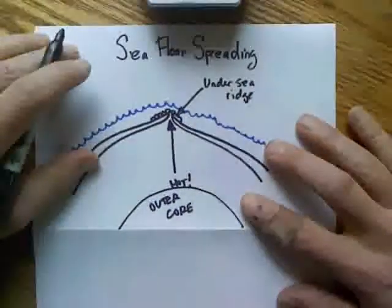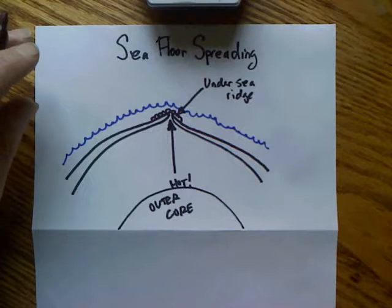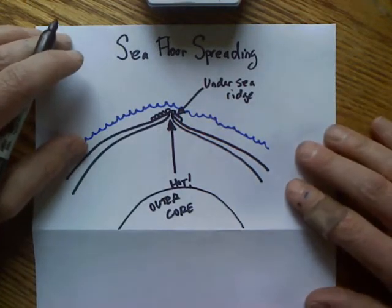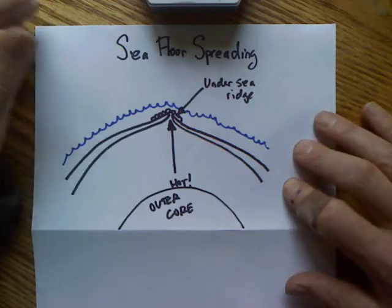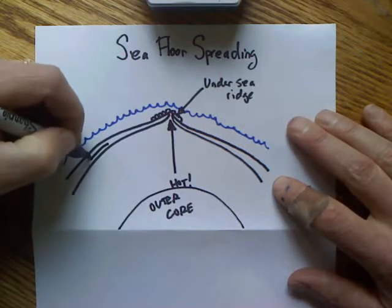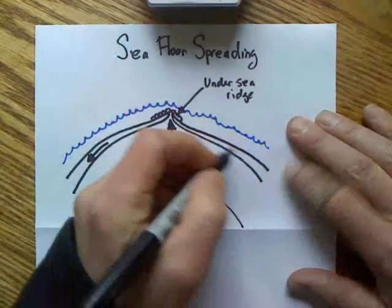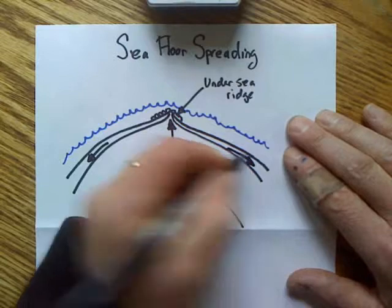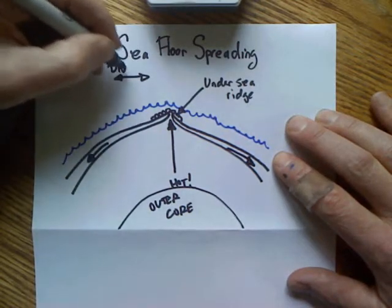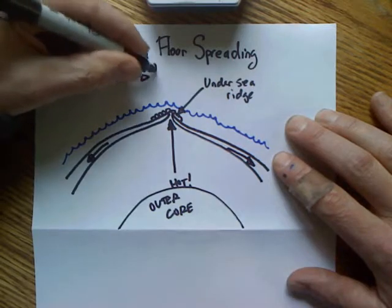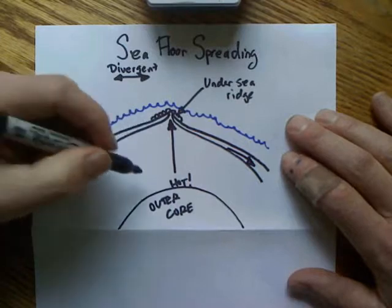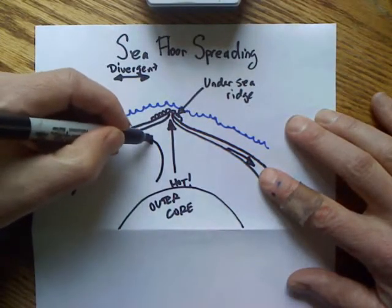This is huge — it goes all the way from one end of the Earth to the other, pretty much down the Atlantic. It's one of the largest features on our planet, but it's underwater, and the mountains can be as tall or taller than Mount Washington. So these plates, which are lithosphere plates, are moving apart — that is called a divergent boundary, which means they're pulling apart.